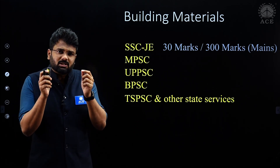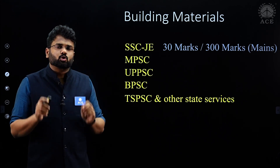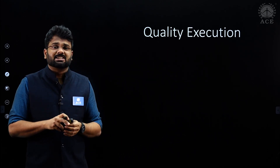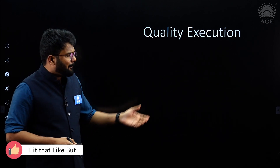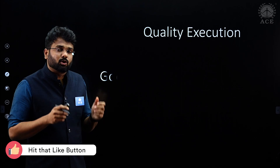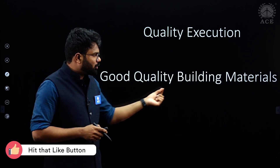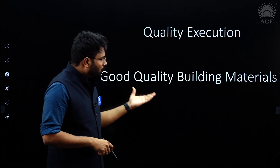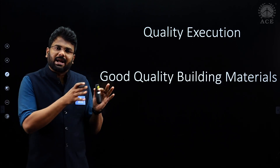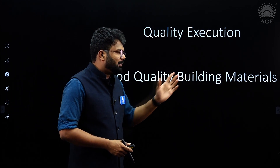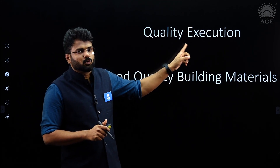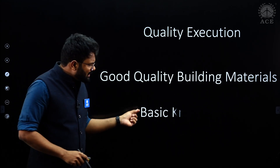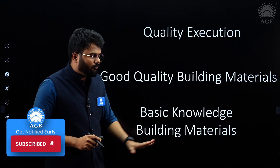Why do you think such a high weightage is there? Because when you enter into the service, most of the time your job is to supervise the quality execution at site — quality execution as per specification in the contract. A major part of this quality execution is the quality of building material which you have to use. As a site engineer, you should know what tests you have to do in the lab or at field to ensure that good quality building materials are being used for execution. This is what the examiner is checking — that the candidate has basic knowledge of building materials.